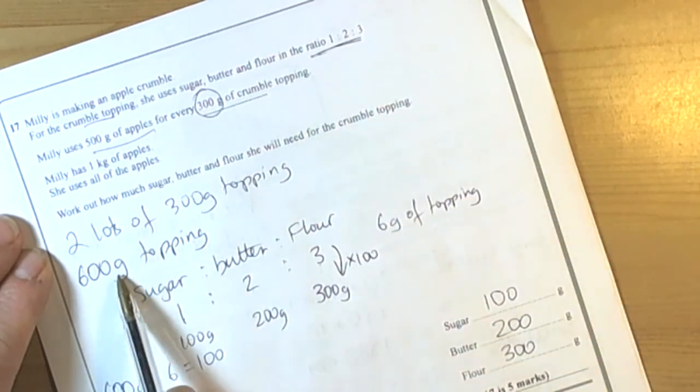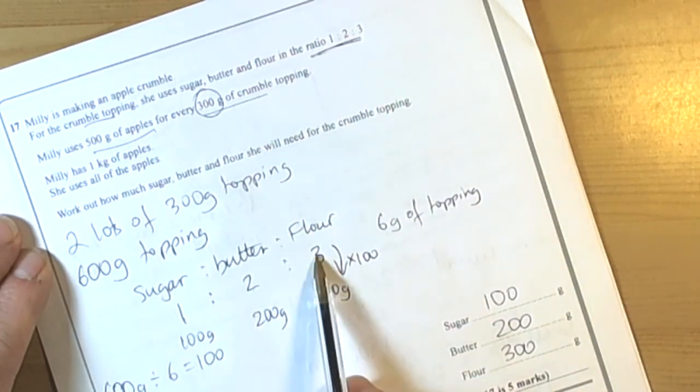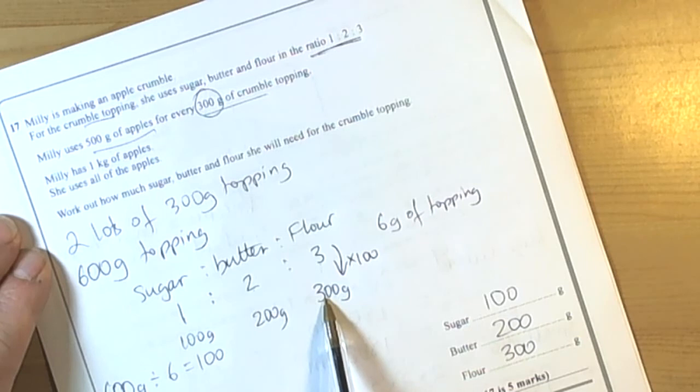So best to write out the words with the ratio underneath, look for the multiplying factor, and you can then work out how much of each of the ingredients you need.